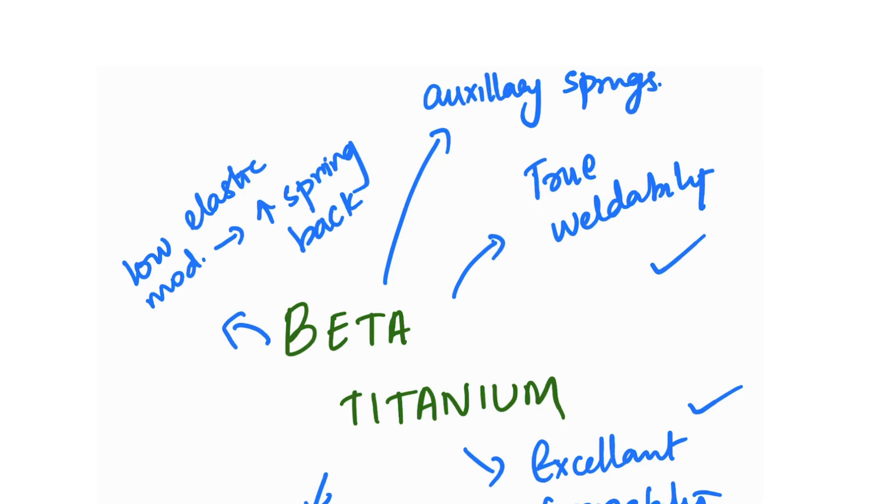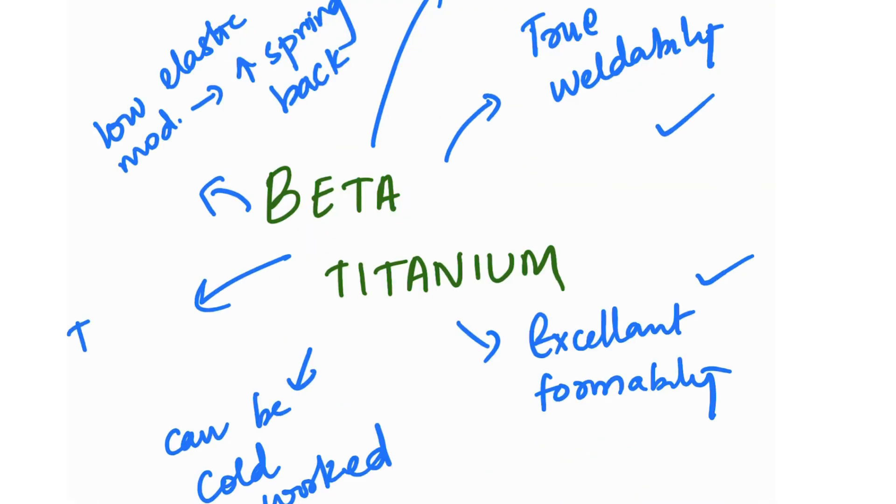Beta titanium is also called the TMA wire. True weldability - if you put the W upside down, it becomes TM for TMA. That's one way to remember.